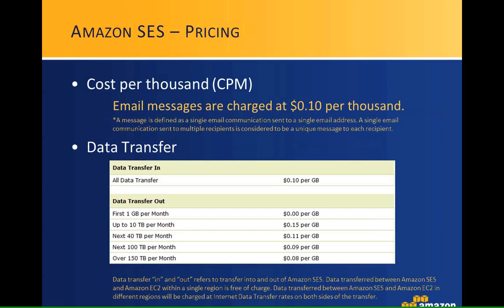Amazon SES pricing is simple and cost-effective. Email components break down into two pieces. The first is cost per thousand (CPM), an industry standard term. Our rate is a flat 10 cents per thousand messages. A message is either sent to one recipient or to multiple recipients, but each recipient counts as a send — so it's cost per message sent.